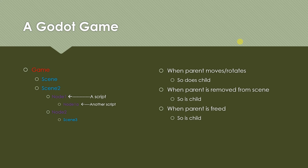Godot ships with a bunch of nodes that you can use for various functionality. For example, there's a node called Sprite that you can use to draw images on the screen. There is a node that will allow you to do ray intersections. There are nodes that allow you to define physics objects and things like that. These are little objects with various functionality that you can put inside a scene, and then you can put that scene inside other scenes to create more complex objects. You can extend the functionality of these nodes by attaching scripts to them.